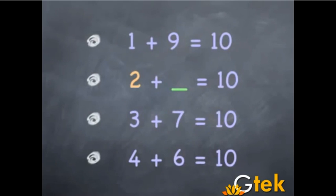1 plus 9 equals 10. 2 plus what will make to get 10? 3 plus 7 equals 10 and 4 plus 6 equals 10. So one side of the series is in ascending order and the other side is in descending order.